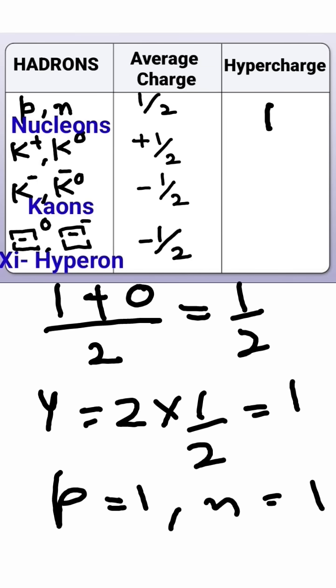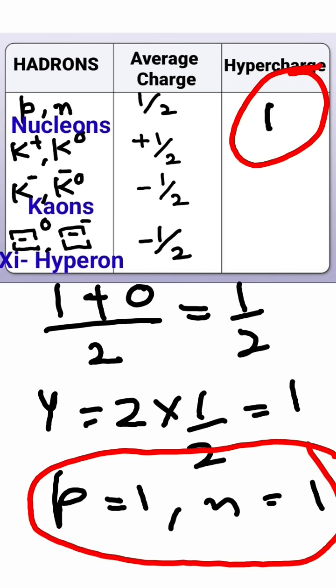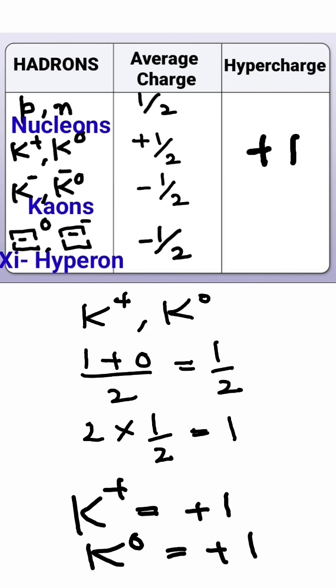So average charge will be one by two and hypercharge will be equal to two into one by two, which is one. So for proton and neutron, hypercharge is one. For K on doublet, K positive and K neutral, average charge is plus one by two, so hypercharge for them will be plus one.